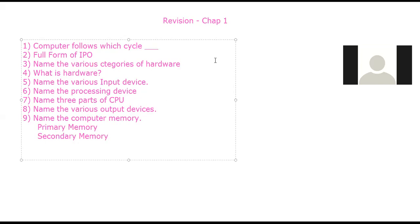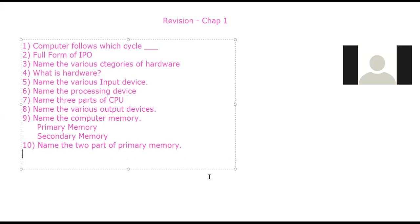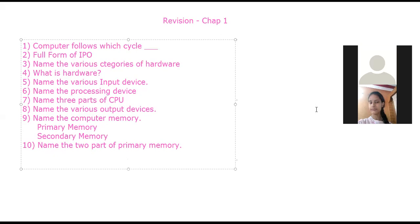There are two parts of primary memory — what are they? RAM and ROM. What is the full form of RAM? Random Access Memory. What is the full form of ROM? Read-Only Memory.